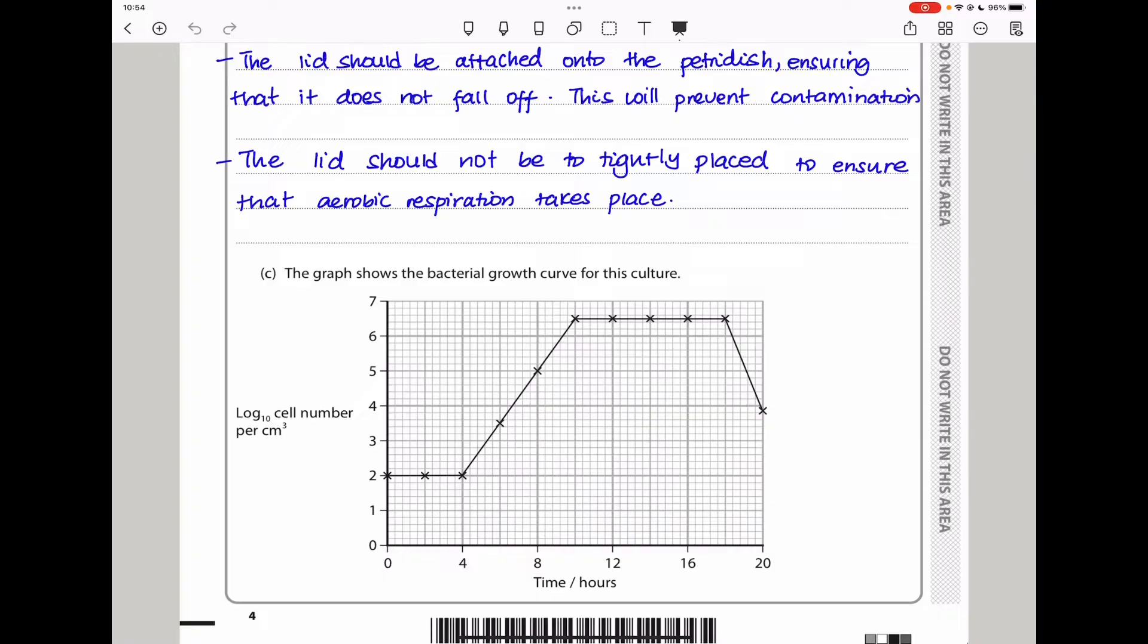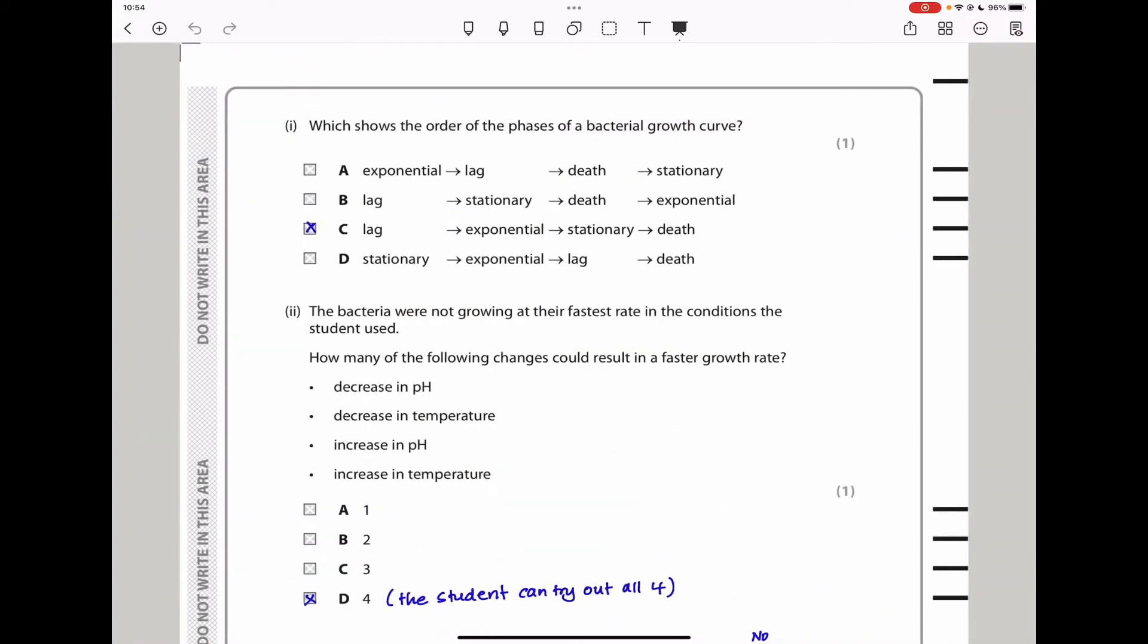Then part C says the graph shows the bacterial growth curve for this culture. So we can see on the vertical axis, there is log 10 cell number per centimeter cube. And the horizontal axis, we have time in hours. We can see from the beginning when time is zero, there is the lag phase. Then there is the exponential phase or the log phase. There is a stationary phase, and then we have the death phase. Here they say, which shows the order of the phases of a bacterial growth curve? It should be the lag phase, you go to the exponential, stationary, and then the death phase. So the answer here should be C.